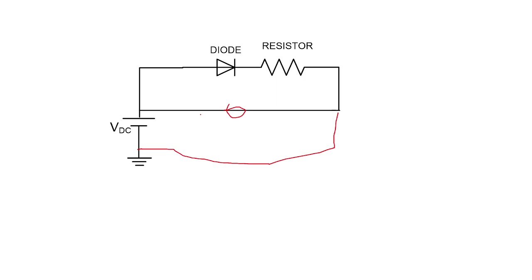He asked about situations where the diode conducts and its voltage drop is 0.7V, and since the circuit was not complete at one point no current flows. These were all conceptual questions around the complete diode circuit, voltage drop process, and current expression for a non-ideal diode.